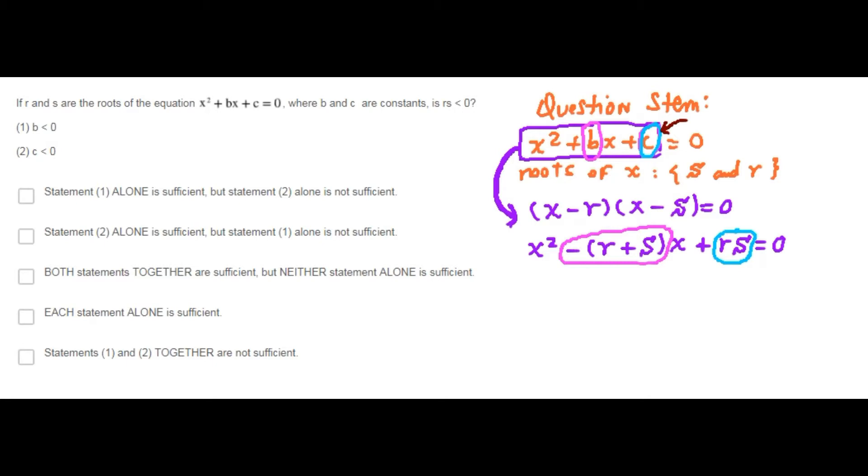Let's go ahead with statement 1. Statement 1 says that b is less than 0. If b is less than 0, we can replace b by negative (R plus S) is less than 0.